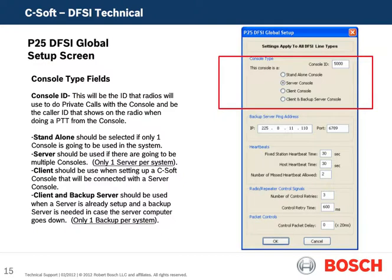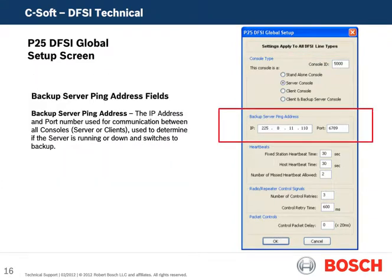The P25 DFSI Global Setup Screen is accessible from both the Per-Line Signaling Setup Screen and the Edit Setup P25 DFSI menu. The Console ID field and Console Type are displayed in the red square. The value entered into the Console ID is the ANI displayed when the console transmits or needs to receive a private call; because of this, each console will have a unique design. The fields to select console type are: Standalone, Server, Client, or Client Backup Server Console — only one may be selected. The Backup Server Ping Address is the multicast IP address and port number used for communication between all consoles, used to determine if the server is running or down and switches to the backup. This should be a unique port number within your system.